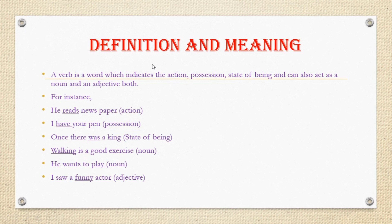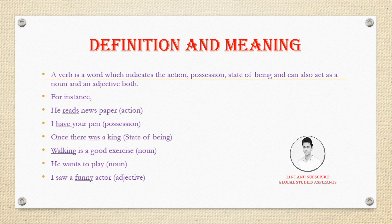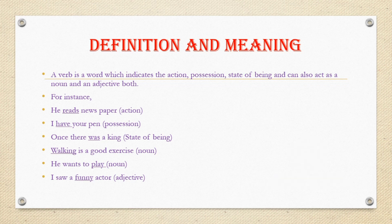First, let's look at the definition and meaning of a verb. A verb is a word that indicates or expresses an action, position, or state of being, and can also act as a noun or an adjective. For example, 'He reads newspaper' — here 'reads' indicates an action.